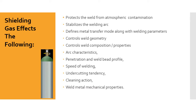Shielding gas stabilizes the welding arc — this is also big. If you're using the right kind of gas, it can give you a much more stable arc, and if you have welders that know what they're doing, it'll severely limit the amount of spatter you've got to clean up. It defines the metal transfer mode along with the welding parameters. It controls weld geometry, which is huge, especially when you're doing thin material or even thick material. It controls your amount of penetration and your weld bead profile.